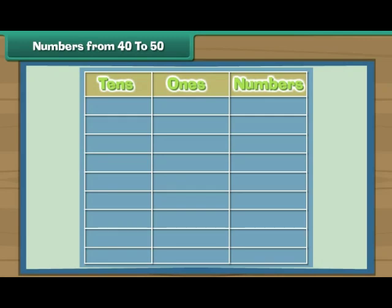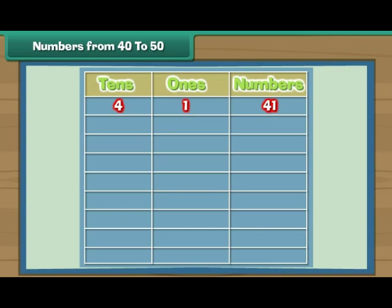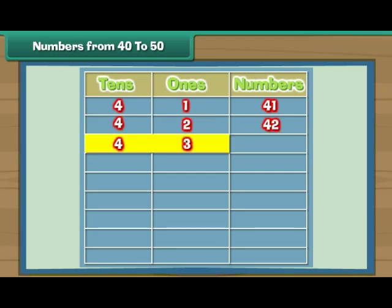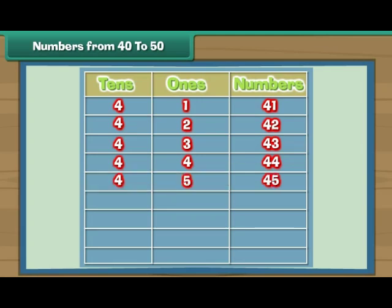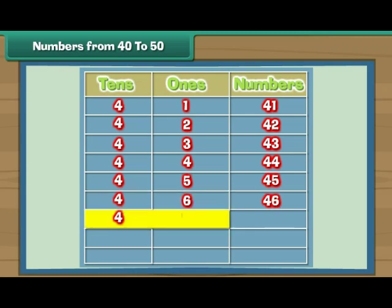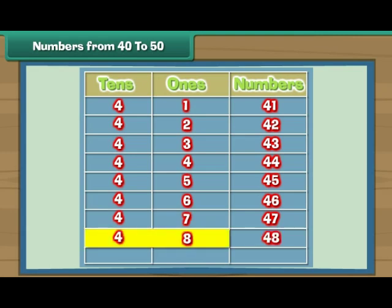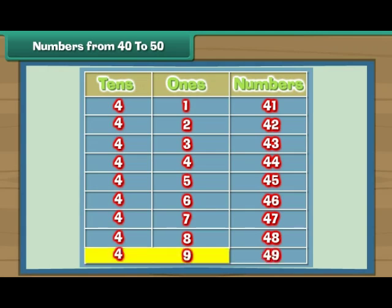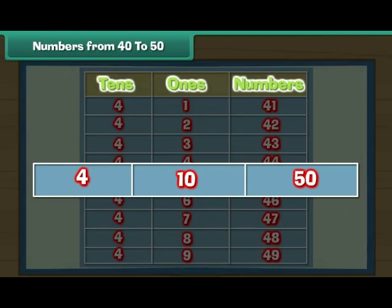Let us now complete this table. Four tens and one give the number 41. Four tens and two give 42. Four tens and three give 43. Four tens and four give 44. Four tens and five is 45. Four tens and six is 46. Four tens and seven is 47. Four tens and eight is 48. Four tens and nine is 49. Four tens and ten give five tens — that is 50.